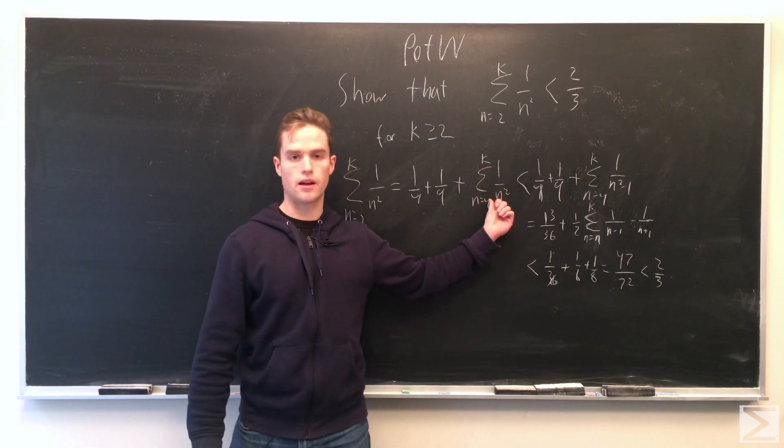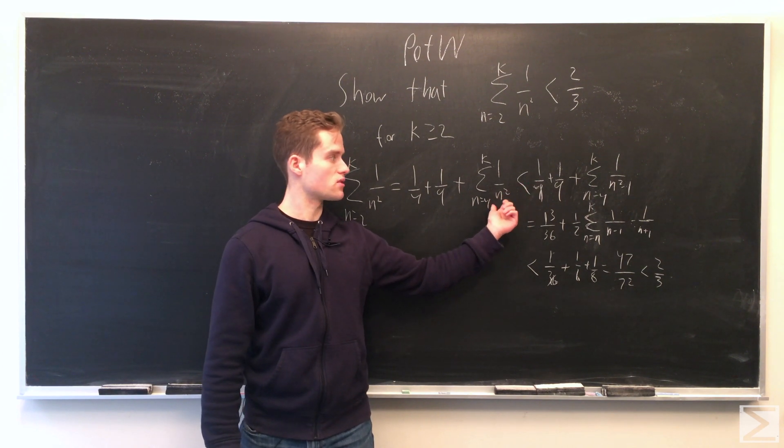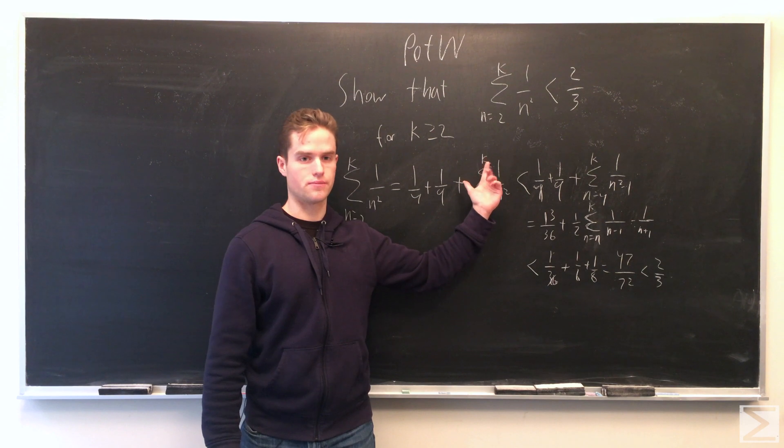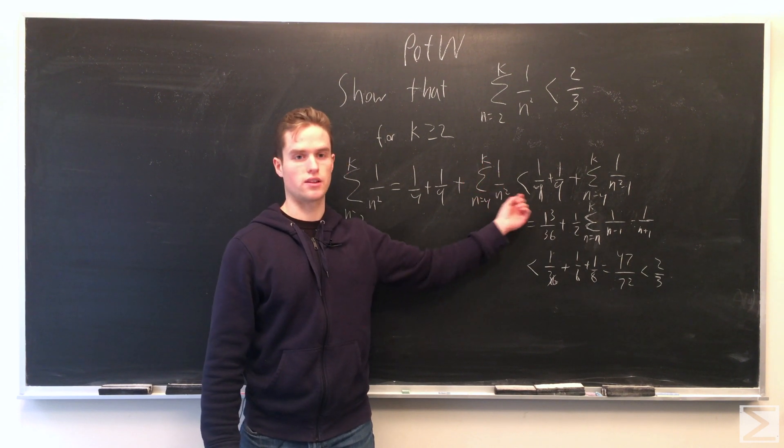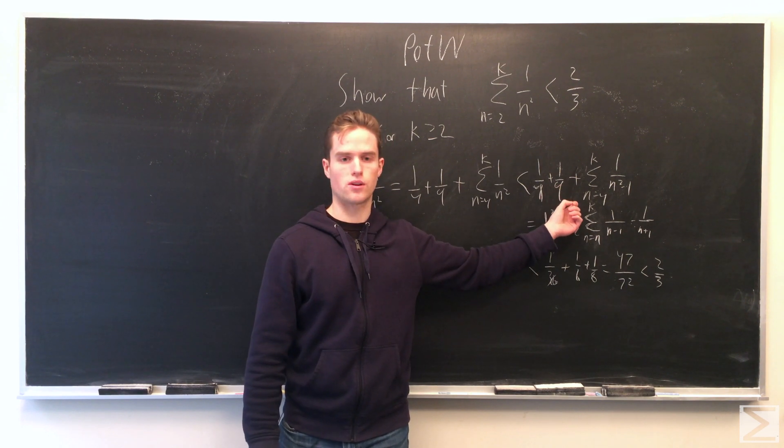And then our next step, we're going to change n squared to n squared minus 1. So if we decrease the denominator, we're only increasing this total sum, so this is strictly less than 1/4 plus 1/9 plus sum n equals 4 to k, 1 over n squared minus 1.